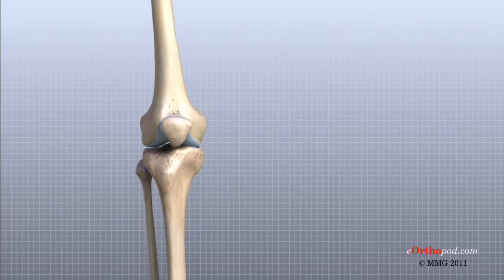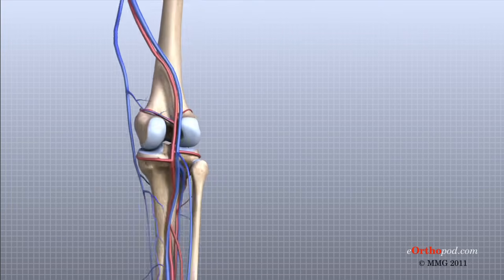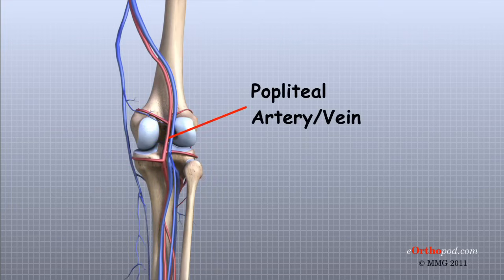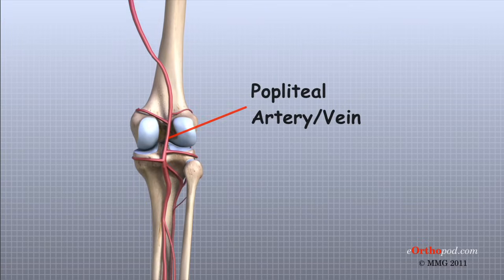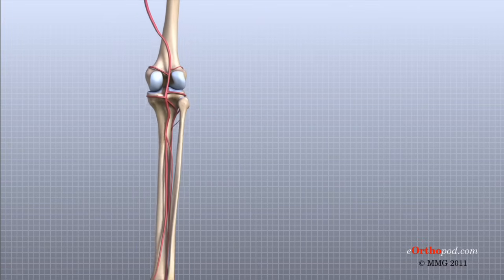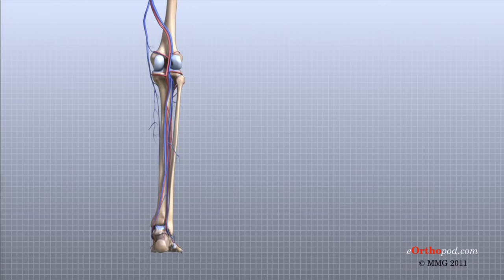The major blood vessels around the knee travel with the tibial nerve down the back of the leg. The popliteal artery and the popliteal vein are the largest blood supply to the leg and foot. If the popliteal artery is damaged beyond repair, it is very likely the leg will not be able to survive. The popliteal artery carries blood to the leg and foot, while the popliteal vein carries blood back to the heart.